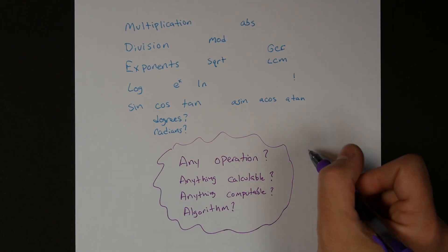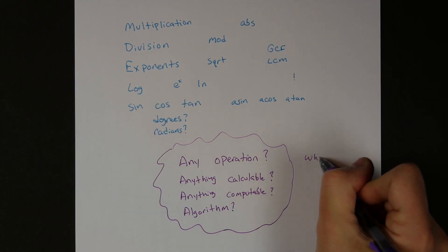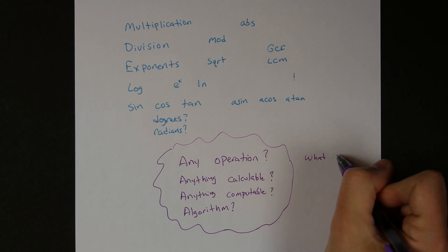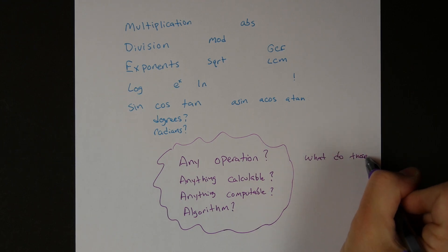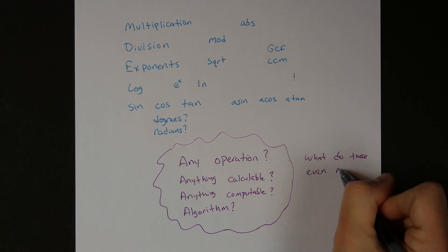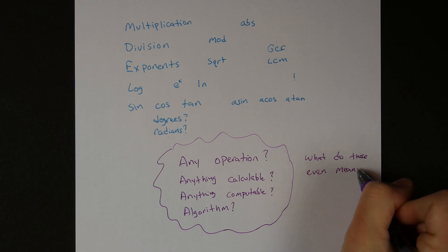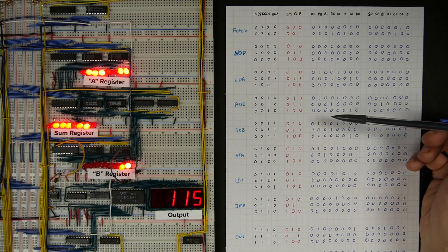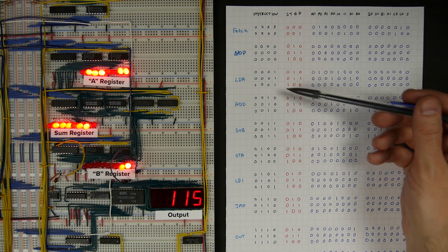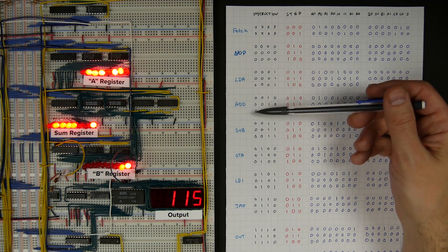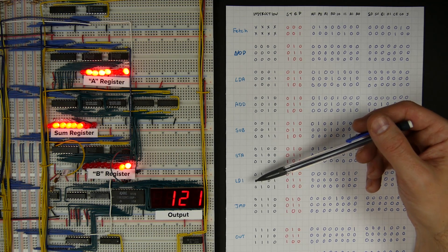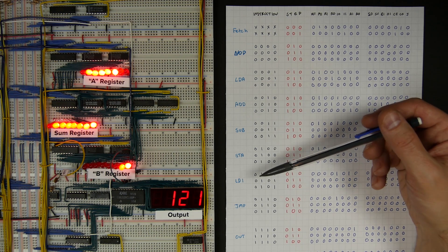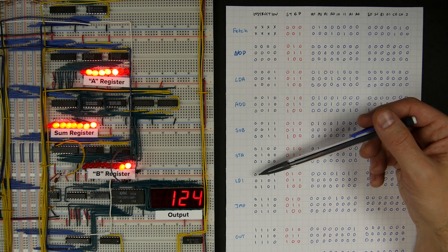Intuitively we all kind of know what sorts of things a computer can and can't do. But without a rigorous definition of the set of computable problems, how are we ever going to know if we've got all the instructions we need to compute anything? This question of what you need to compute anything came up pretty early in the development of computer science.